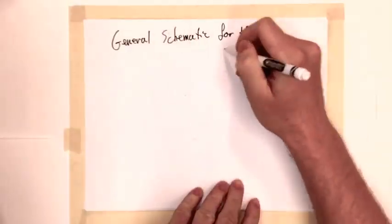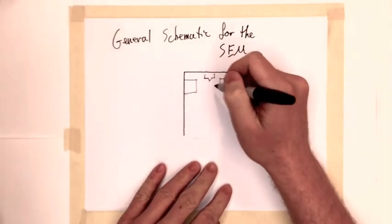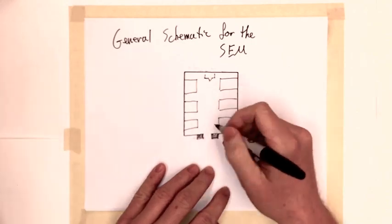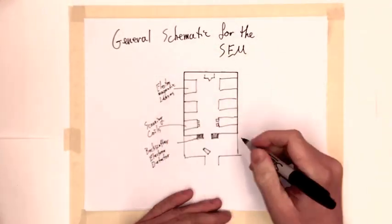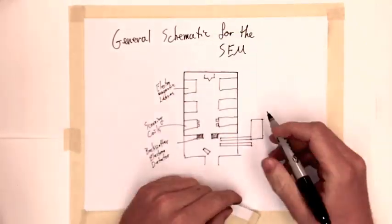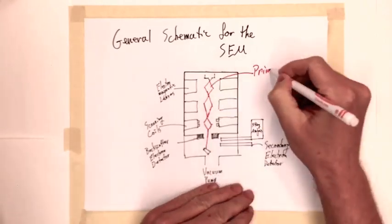As we have seen in other videos on SEM, a beam of primary electrons is accelerated towards a sample and focused using electromagnetic lenses. The beam is raster scanned across the sample, which produces several different types of output radiation. The output beams are measured by a number of different detectors in the vacuum chamber.